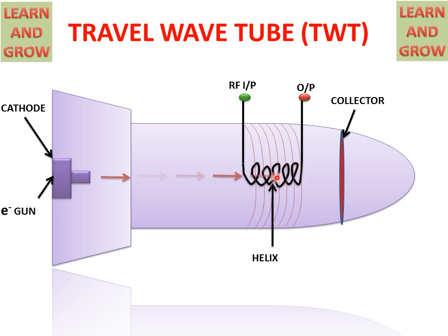Electrons pass through the helix. The helix is used as a coil and has the property of retarding the velocity of the RF wave so that there is proper interaction between the RF wave and electron beam. Positive and negative fields are applied.